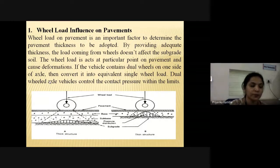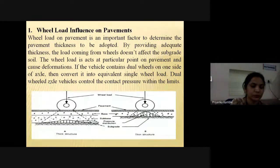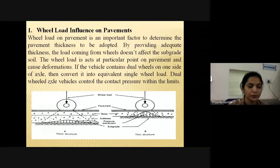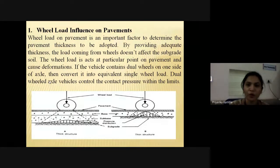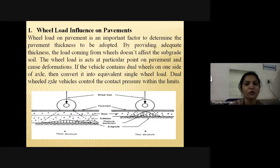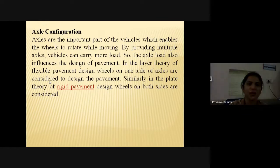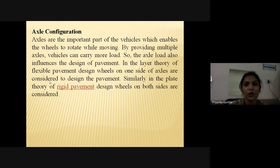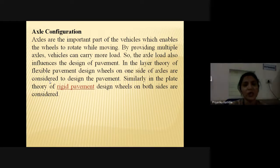Wheel load on pavement is an important factor to determine pavement thickness. By providing adequate thickness, load from wheels does not affect the subgrade soil. The wheel load acts as a particular point on pavement and causes deformation. If the vehicle contains dual wheels on one side of an axle, it should be converted to equivalent single wheel load. Axles are an important part of vehicles enabling wheels to rotate; by providing multiple axles, vehicles can carry more load. Axle load also influences the design of pavements.